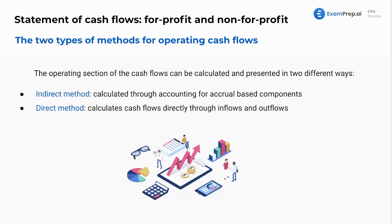As mentioned with a little foreshadowing, we've got two methods for preparing the operating cash flows on your statement of cash flows. The operating section of the cash flows statement can be calculated and presented in two different ways. We have the indirect and direct method, and I'd rather just show you rather than talk about it here.